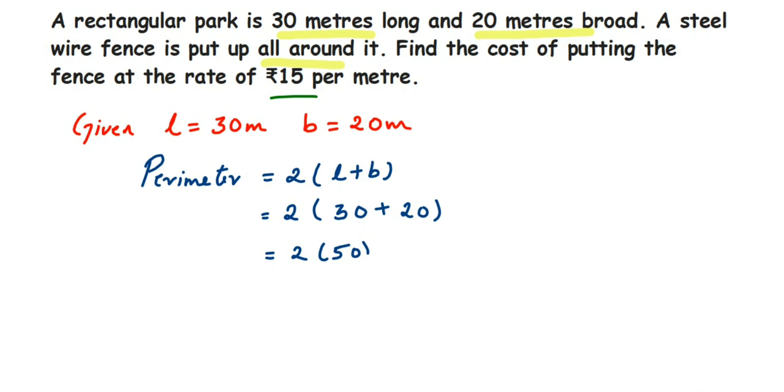understand that this bracket means multiplication. So 2 times 50 equals 100 meters. We got the perimeter - the total perimeter is 100 meters. So the wire required